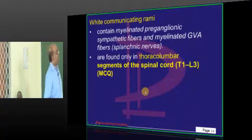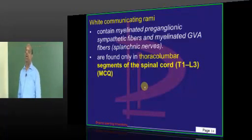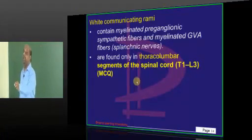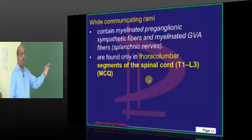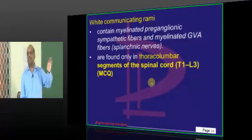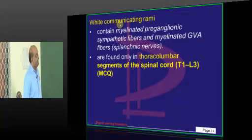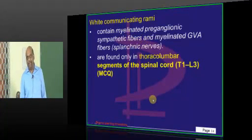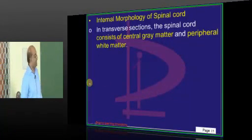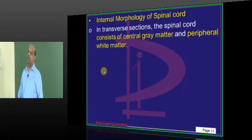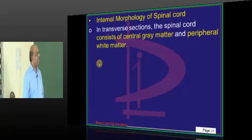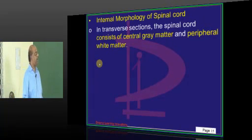The white ramus communicantus is found only in the thoracolumbar segments of the spinal cord. That completes our review of the spinal cord structure, and next we move to the internal morphology of the spinal cord.